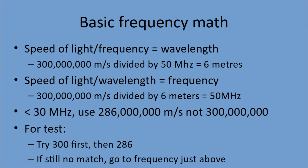The speed of light divided by the frequency is the wavelength. Our speed of light is 300 million meters per second, so 300 million divided by 50 megahertz gives us a wavelength of six meters. And when we talk about a frequency band, we may talk about it in megahertz or call it, say, the six meter band. The reverse: the speed of light divided by the wavelength gives us the frequency — 300 million meters per second divided by 6 meters gives us 50 megahertz. If we stick with megahertz when we do these calculations, it's pretty easy.